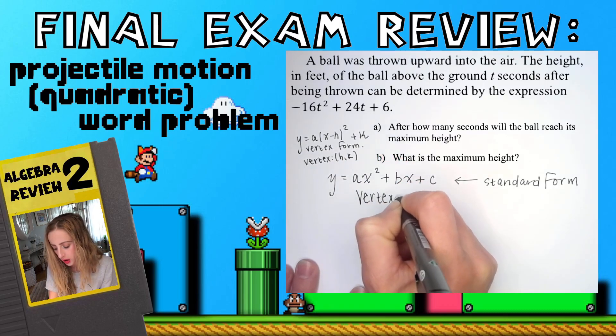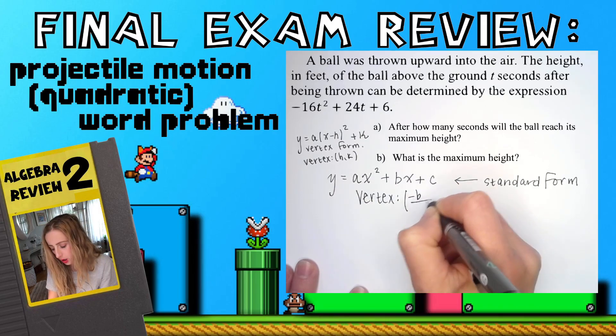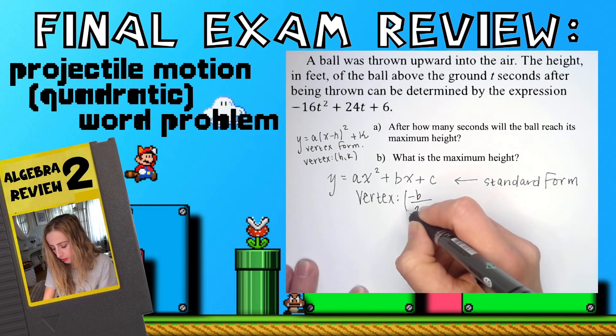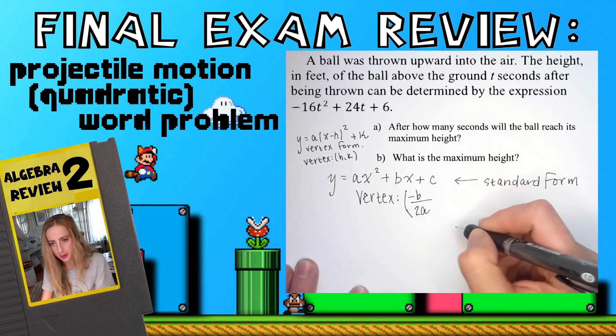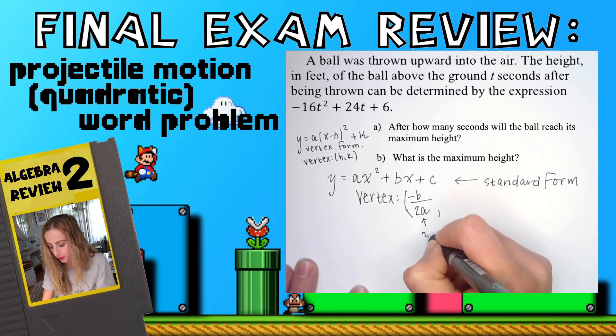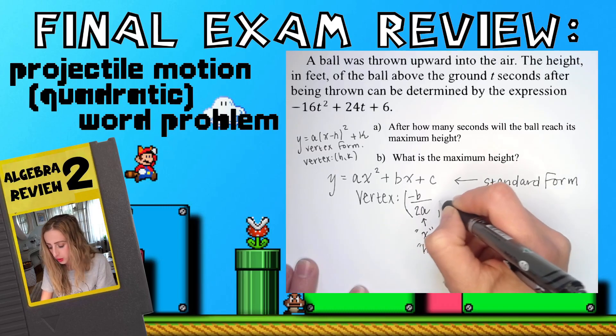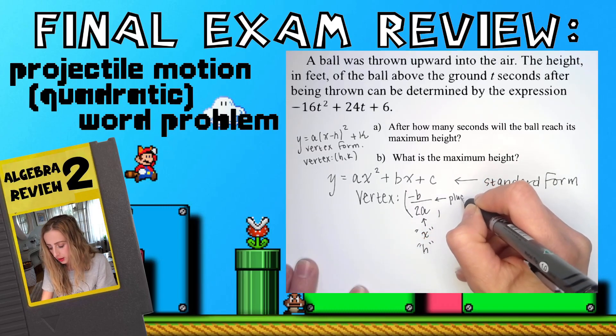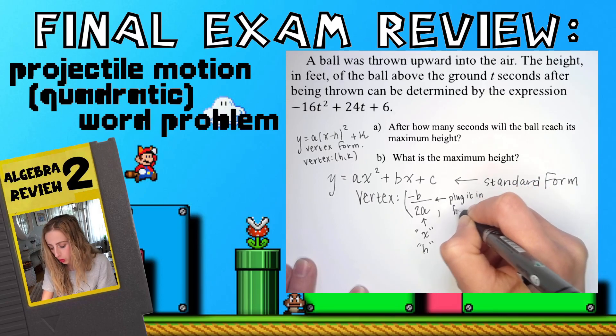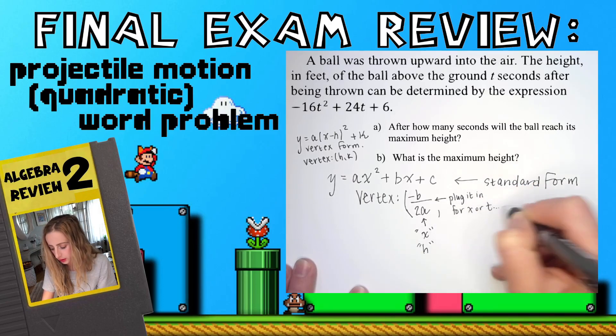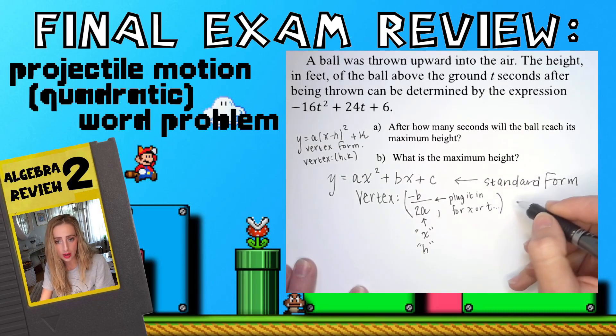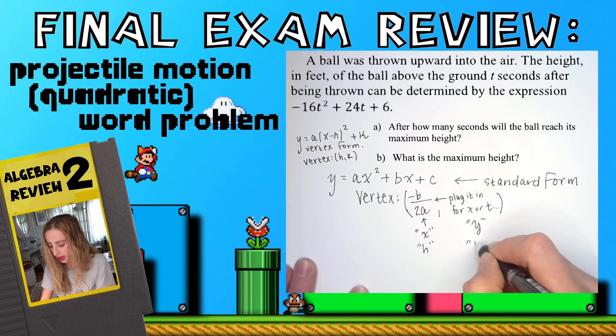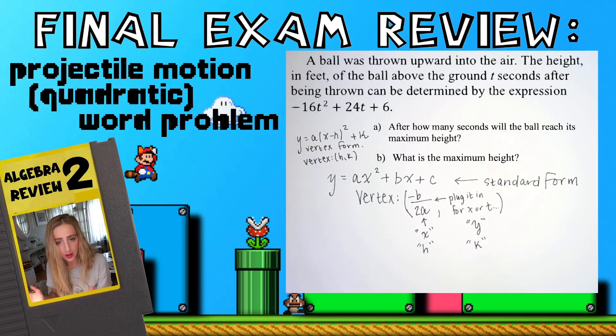Vertex from standard form, though, this is an algebra 1 throwback: you would do negative b over 2a. Negative means opposite of b over 2a. You're going to get a number, that right there is your x value or the h of the vertex. Then you take that number, you plug it in for x or t, and you're going to get your y value, your k, your input, your output, whatever you want to call it. And that's what we're going to do.